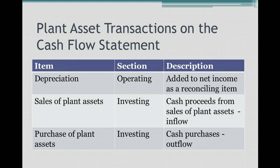Sale and purchase of plant assets affect the investing activities section. If we sell a plant asset, we receive money, and that money is shown as a cash inflow to the company under the investing activities section. If we buy a plant asset, cash goes out of the company, so this will be shown as a cash outflow. Outflows are shown as negative numbers, and inflows are shown as positive numbers in your cash flow statement.